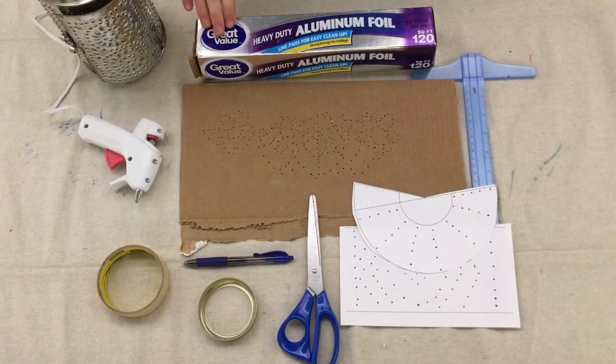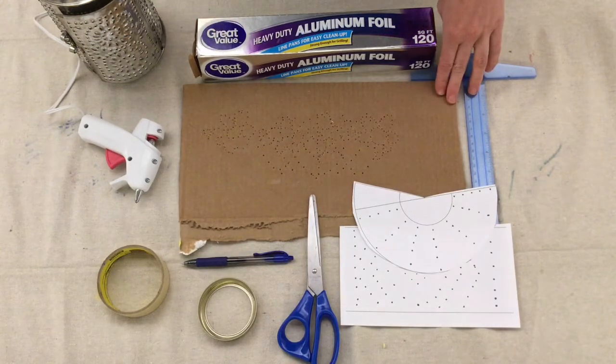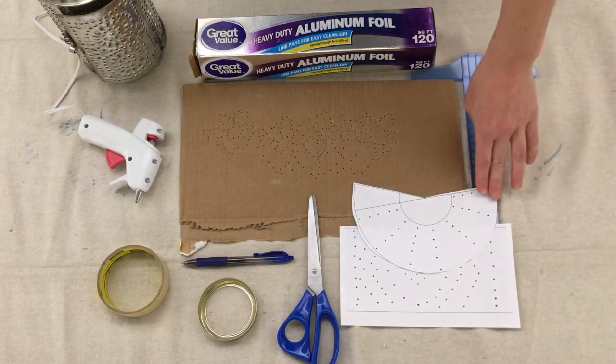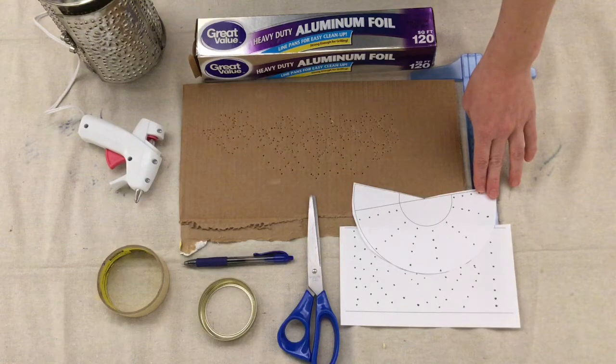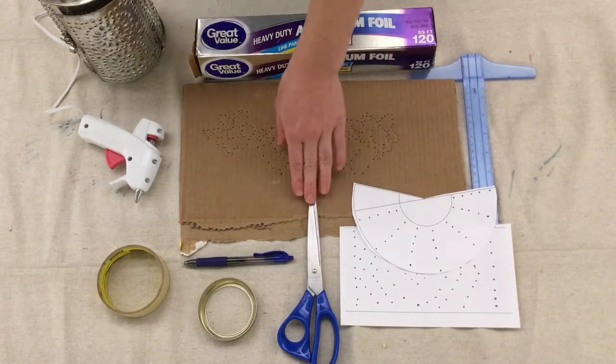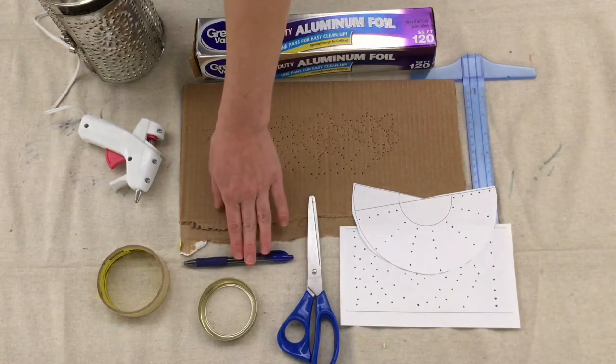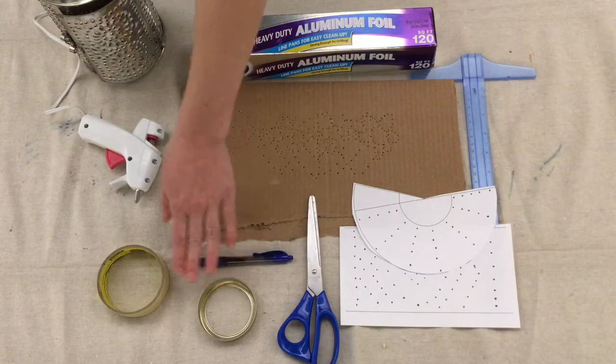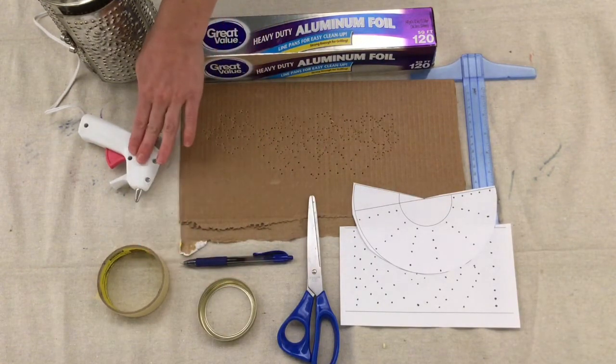Here's what you're going to need. Aluminum foil, a piece of scrap cardboard, a pattern which you can find on our website, litchfieldhistoricalsociety.org, a ruler, a pair of scissors, a pen, a mason jar band, tape, and a hot glue gun.